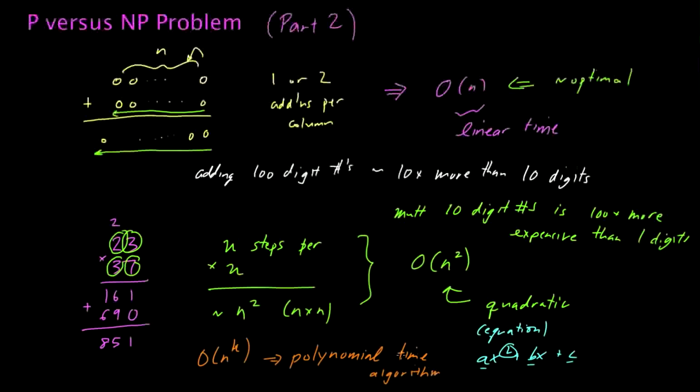When we say n to the k, n here represents the—and this is actually a very subtle point, but one that comes up quite frequently—it represents the input size, not the value of the input, but the size of the input. In other words, the input size here is not 23. The input size is actually the number of digits.